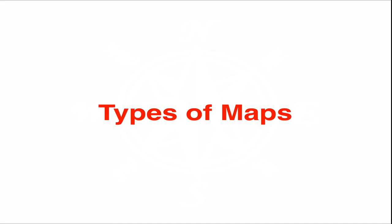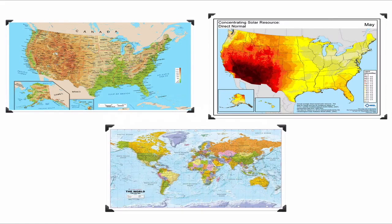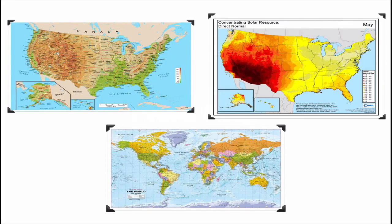There are different types of maps, and the maps we use won't always be color-coded. For instance, you have a political map, a physical map, and a map showing the amount of solar energy received being converted to electricity. Different types of maps show different types of information. In earth science, there's one map in particular you've probably never seen before — that's called a field map.